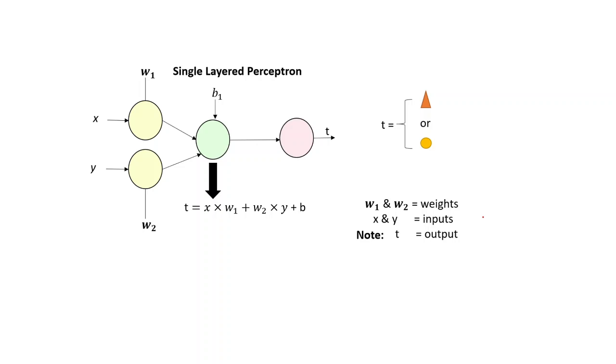This is a single layer perceptron where there are two inputs X and Y. This is the input layer, two inputs X and Y with two trainable weights W1 and W2. It has one bias neuron because it has just one hidden layer since it's a single layered perceptron.